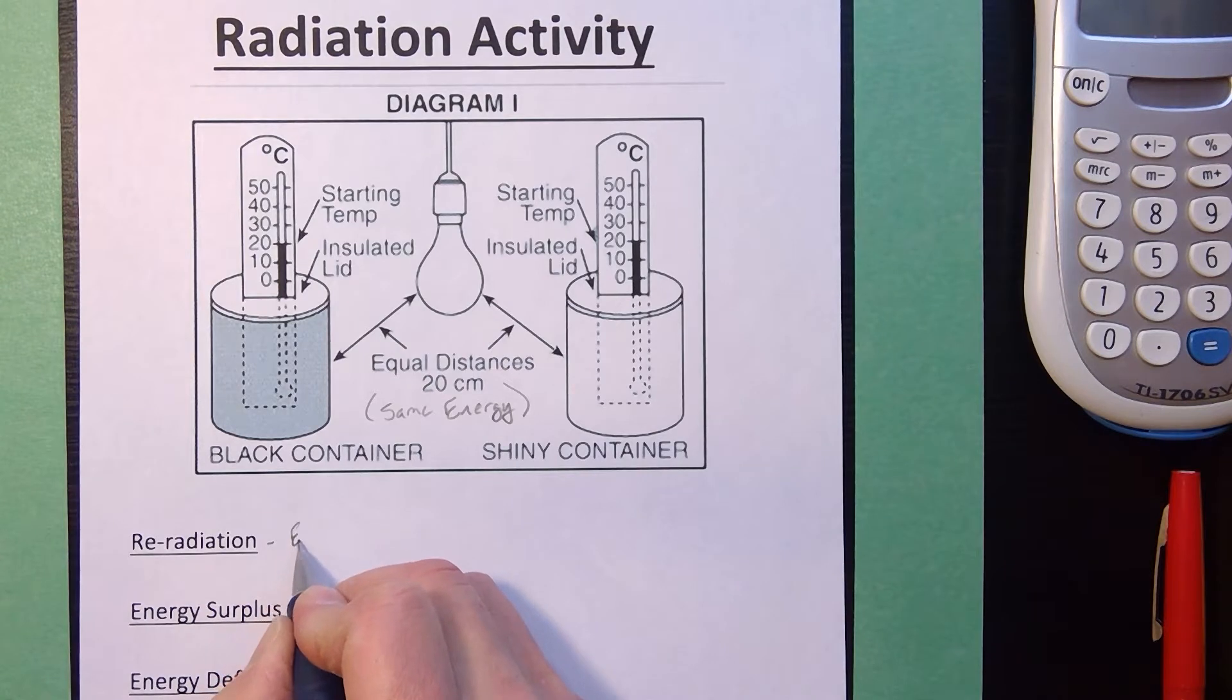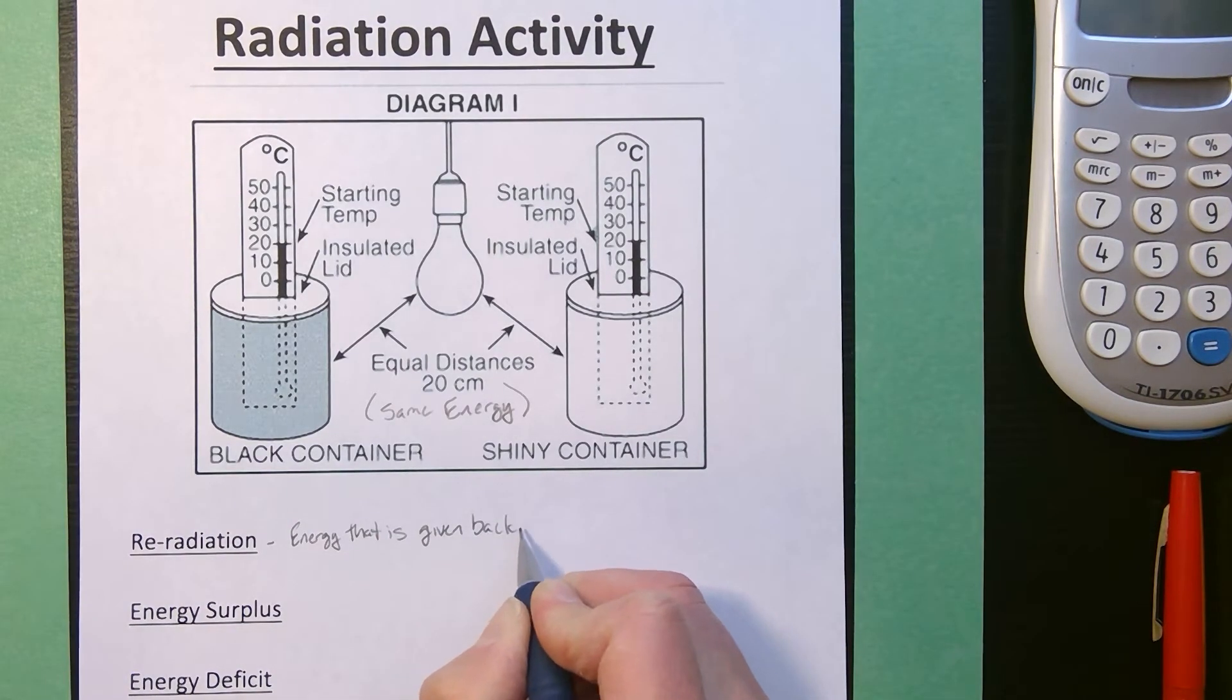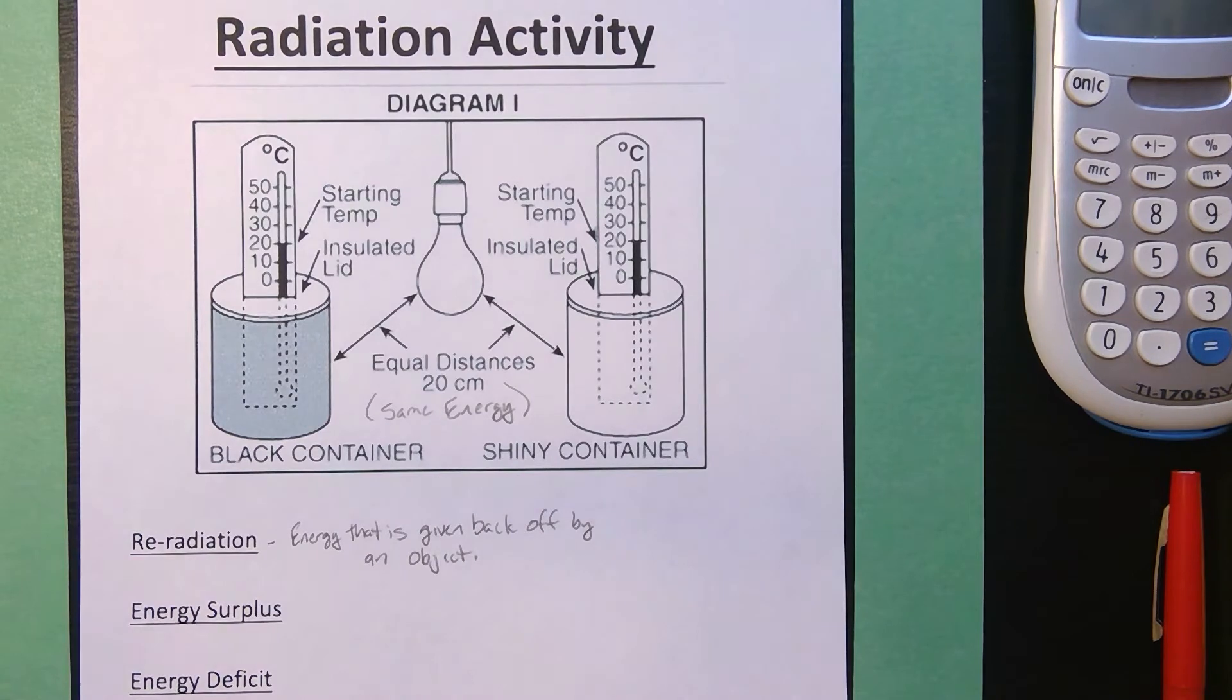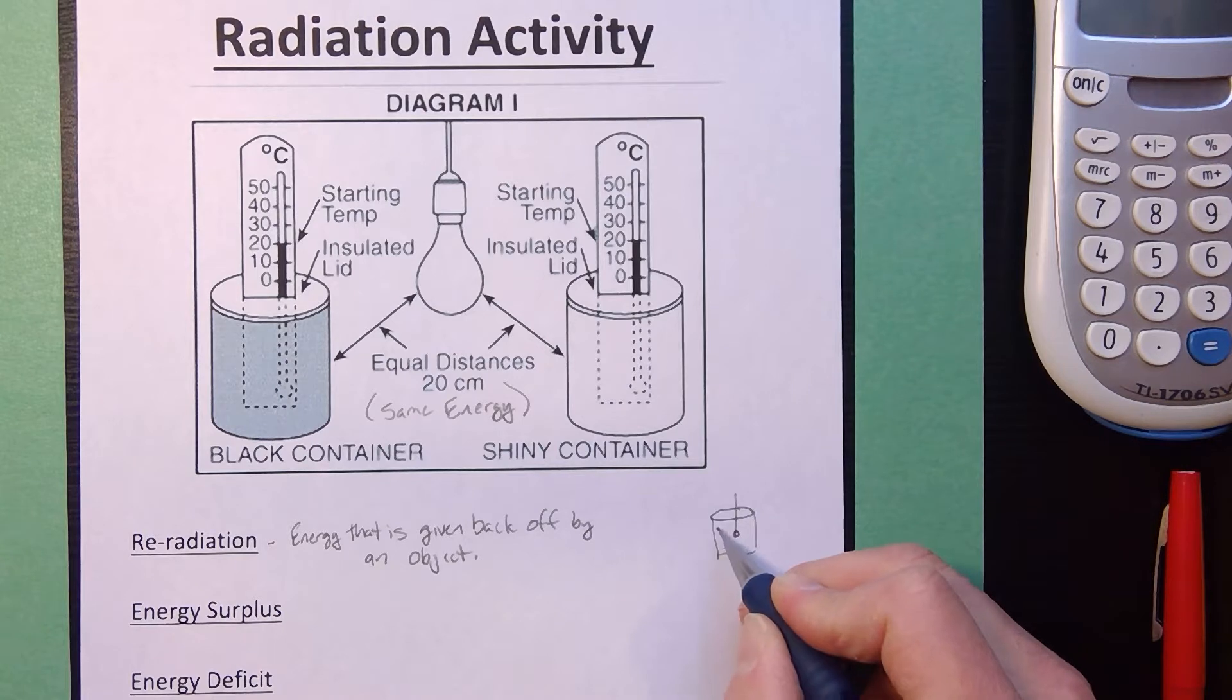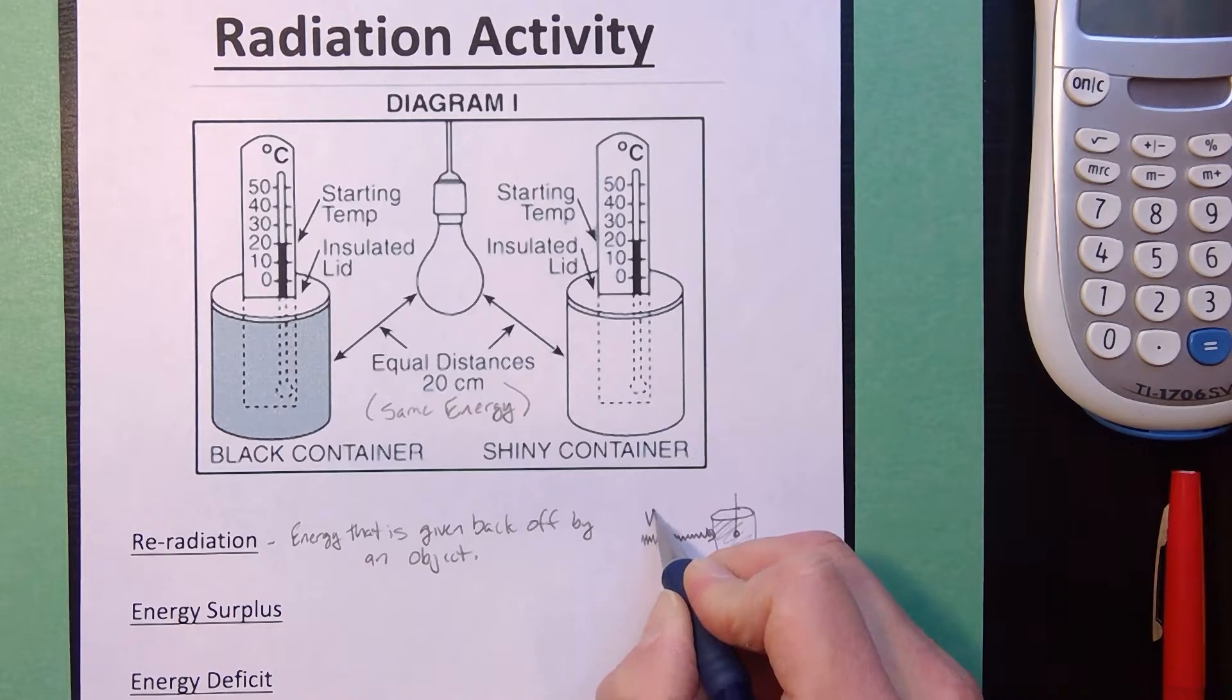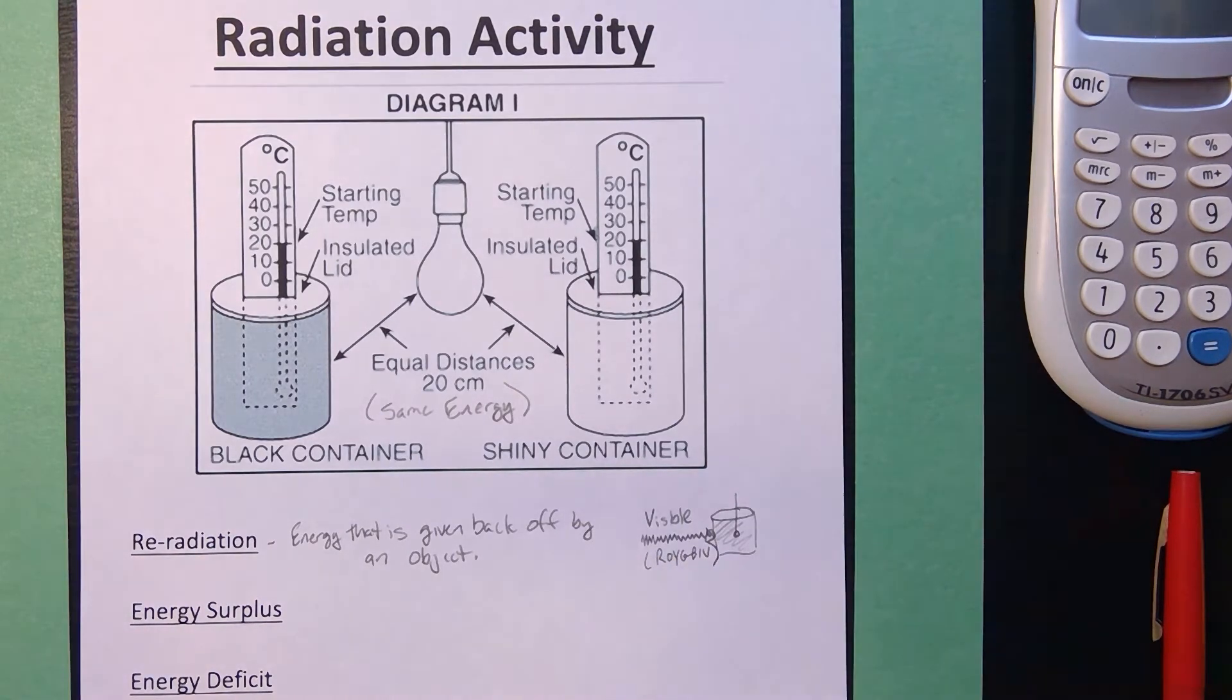Now, re-radiation describes the energy that is given back off by an object. If objects were only receiving and absorbing energy, their temperatures would continue to increase. But most objects sort of stay around the same temperature. So if we were trying to model this, if this was my black can with a thermometer in it, the type of energy it's getting from the light bulb would be shortwave visible light. So the black object would be getting all the colors of the visible spectrum.